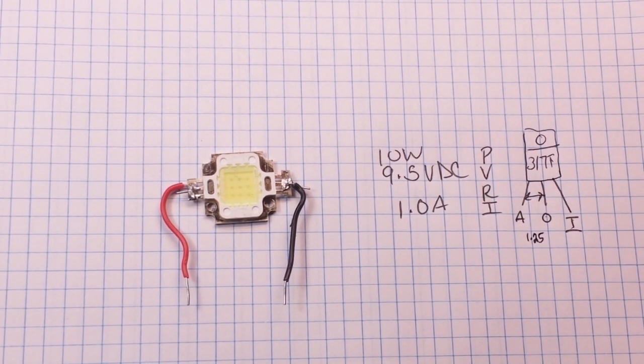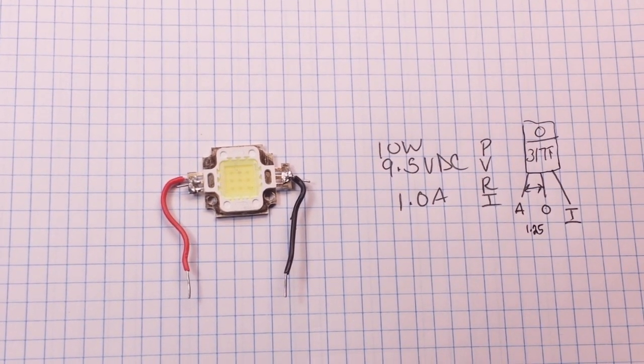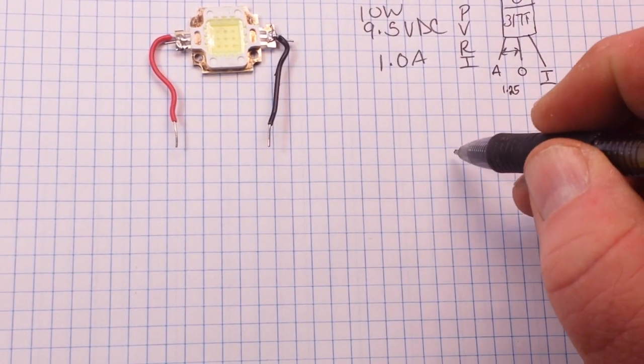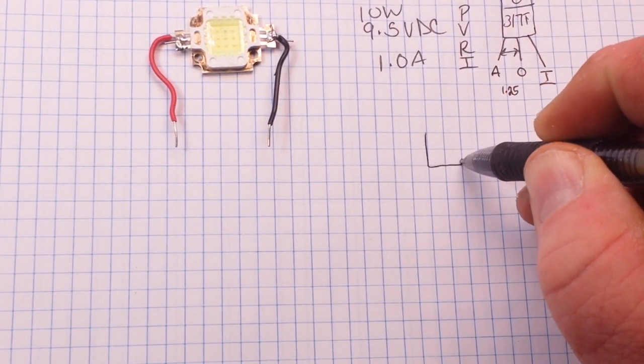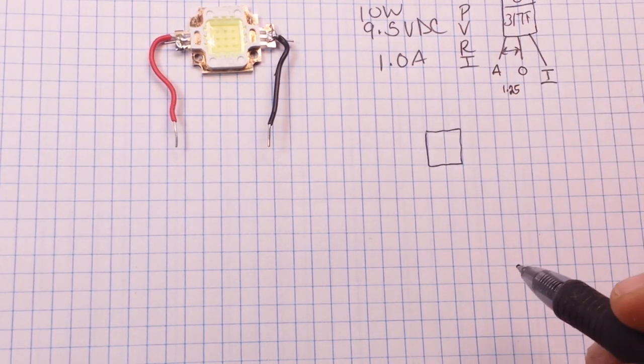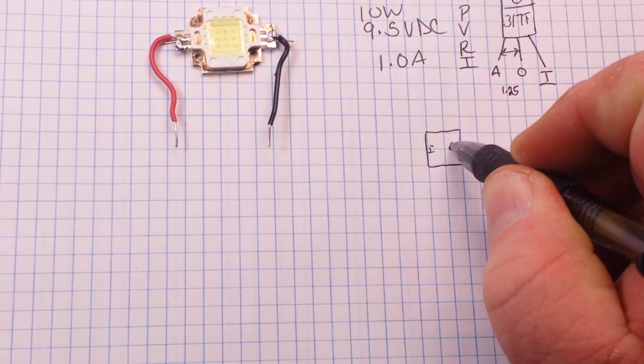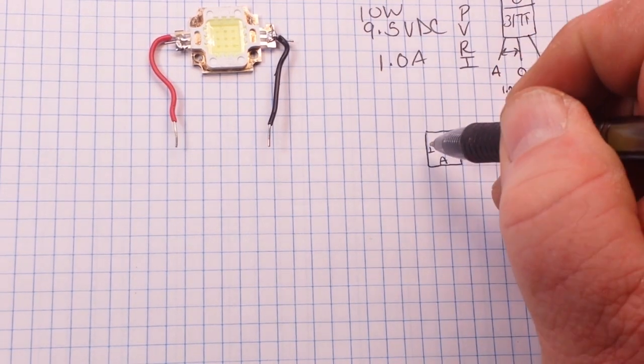So what we can do, based on this information we have, is we can build ourselves a simple little circuit. So this is our LM317. This is our input, our output, and our adjust.